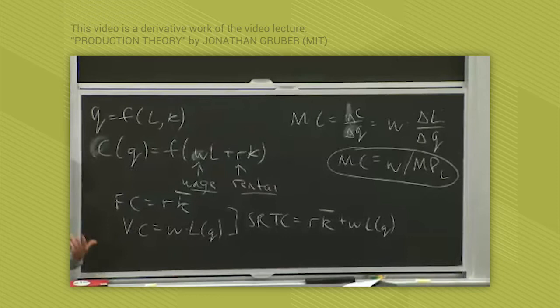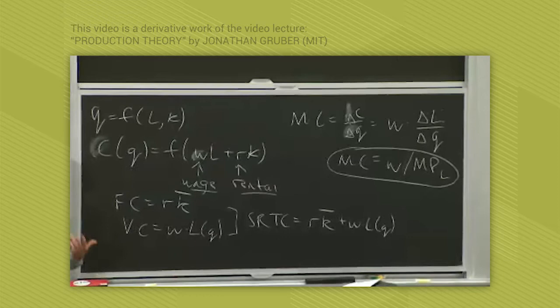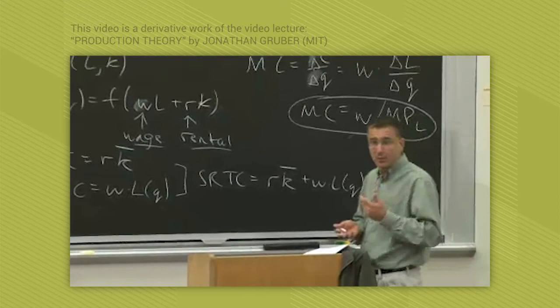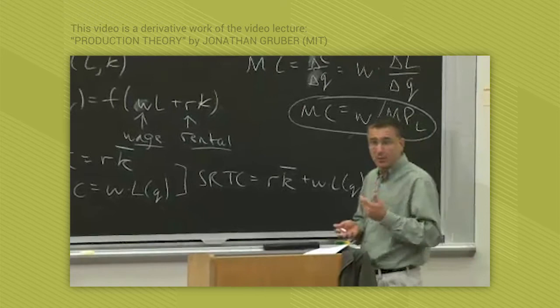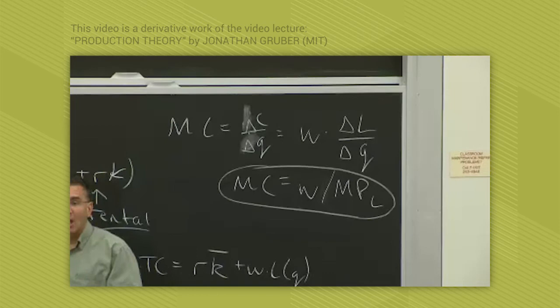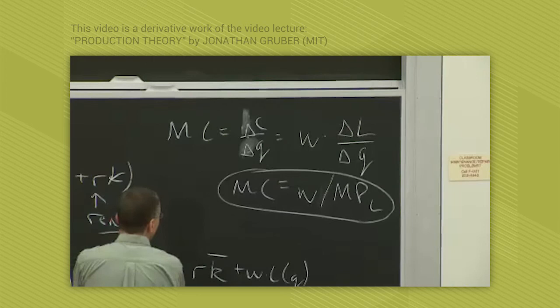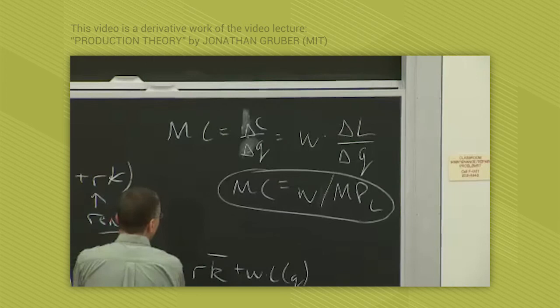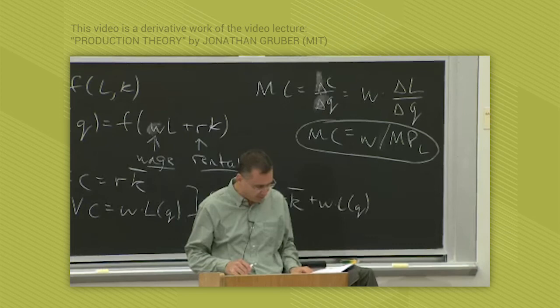So think about this intuitively. What we're saying is the cost of the next unit of production is declining with the marginal product of labor. It sort of makes sense. The more productive is a worker, the less expensive is producing the next unit. The less productive is the next worker, the more expensive is producing the next unit. So there's an inverse relationship between the marginal cost and the marginal product, where the wage is the constant that scales that relationship. So basically, when workers have a very high marginal product, then it's going to be cheap to produce the next unit. When workers have a low marginal product, it's going to be expensive to produce the next unit, and that's going to depend on what you actually have to pay the worker.